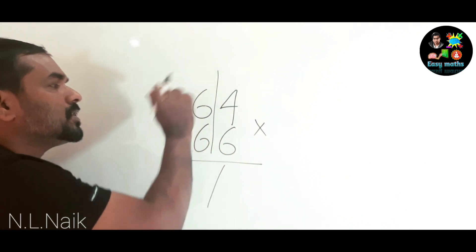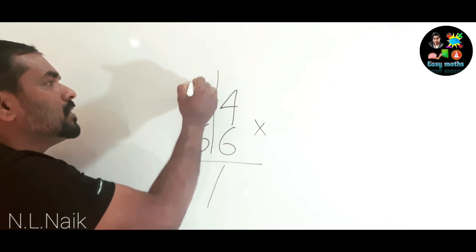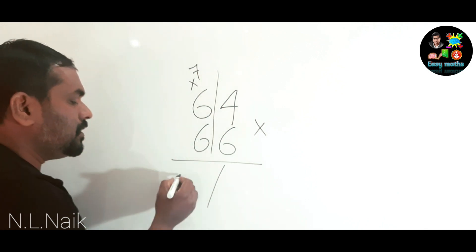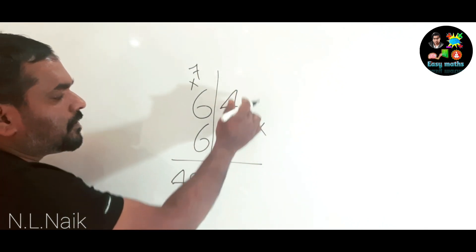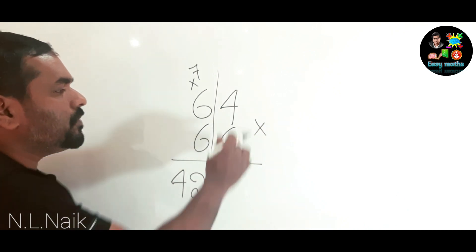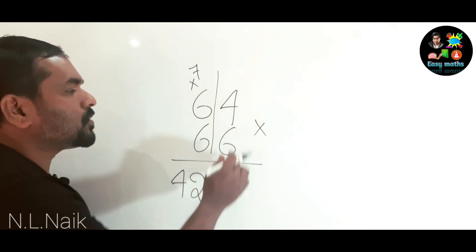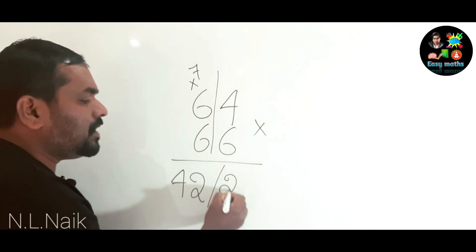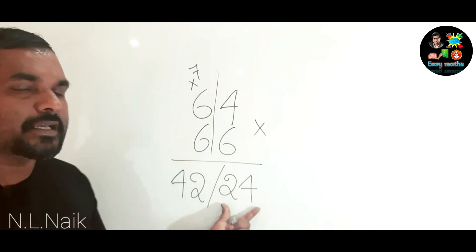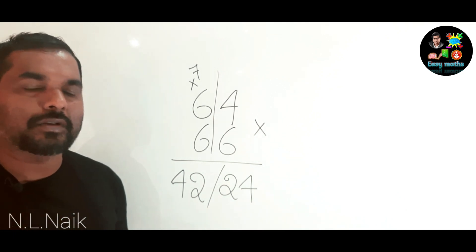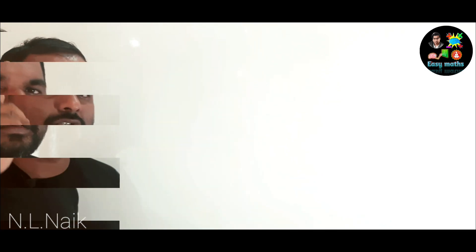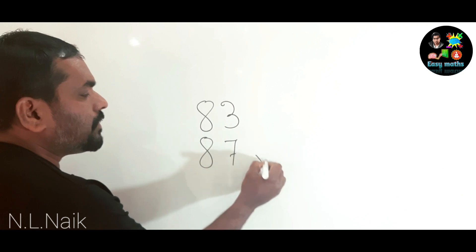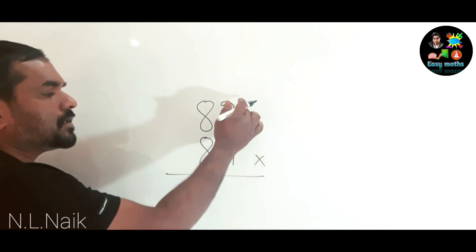So the next consecutive number after 6 is 7. Multiply these two digits. The number of digits on the RHS is always 2.